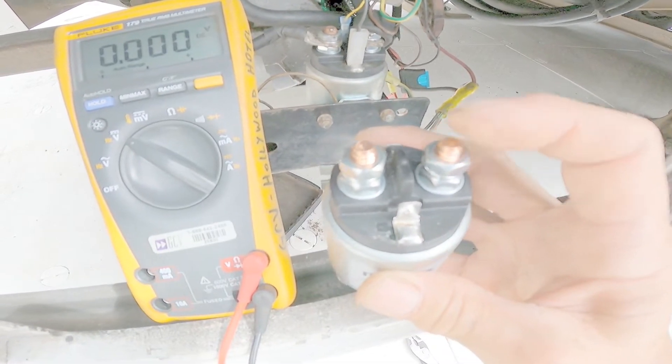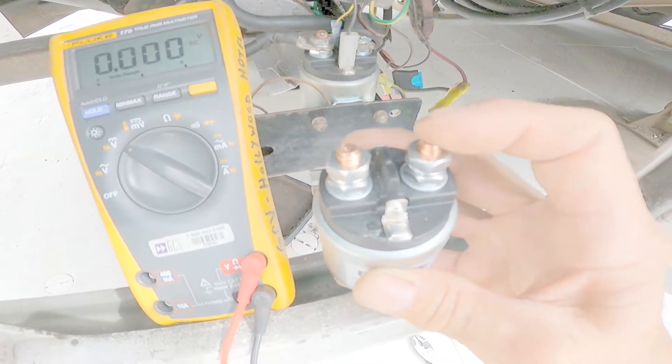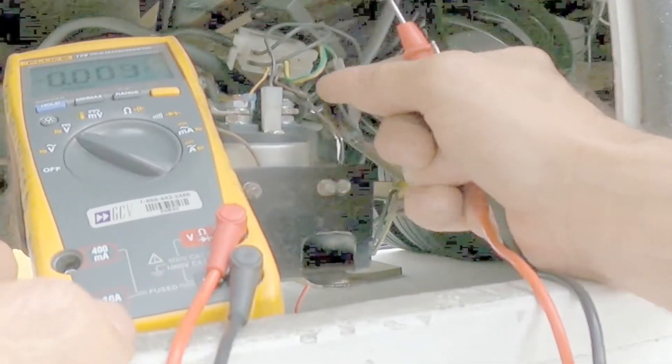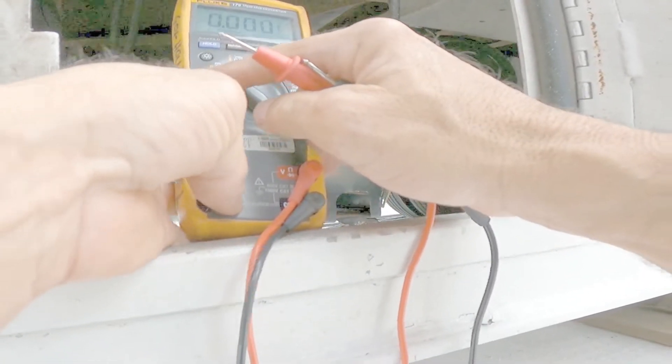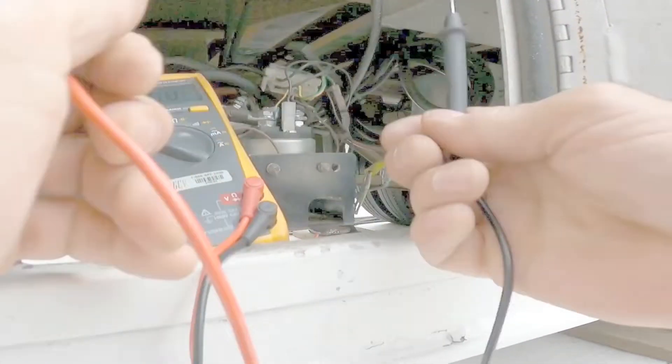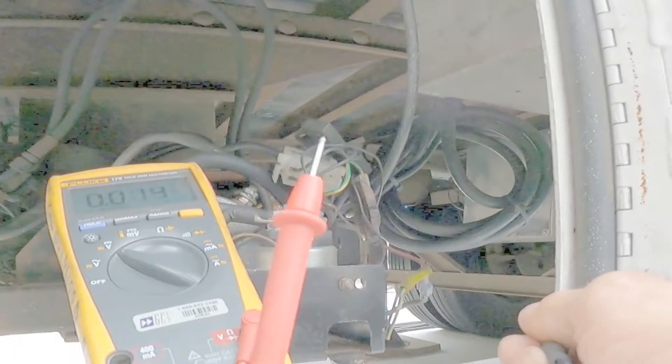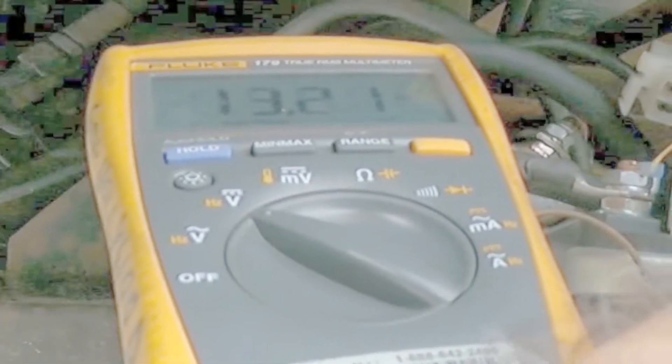So the first thing we want to do is test to see if we've got voltage on the incoming lead of the solenoid. Okay, so we're going to look for voltage right here first. Now we're going to test the voltage on the incoming lead to the solenoid. First set our multimeter to read DC voltage. Take the black negative probe, touch the trailer frame. Take the red positive probe and touch it straight to that. We're seeing 13.21 volts, so we know we've got voltage on the incoming lead of the solenoid.